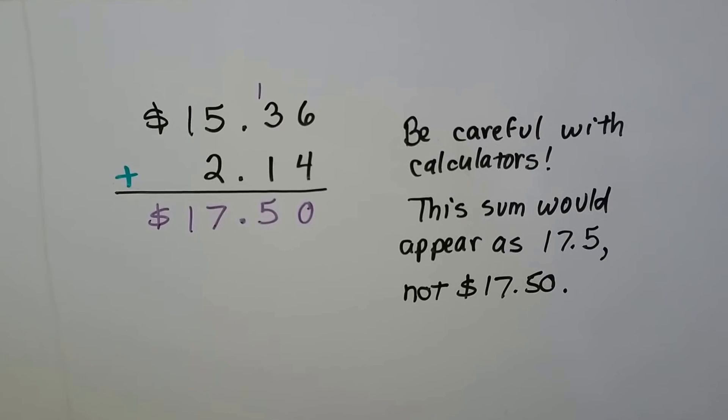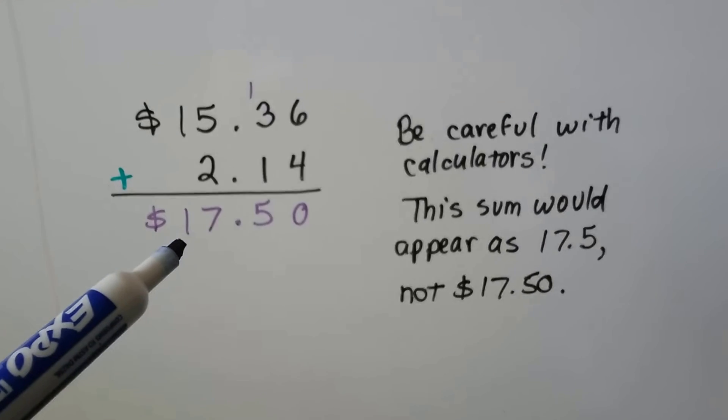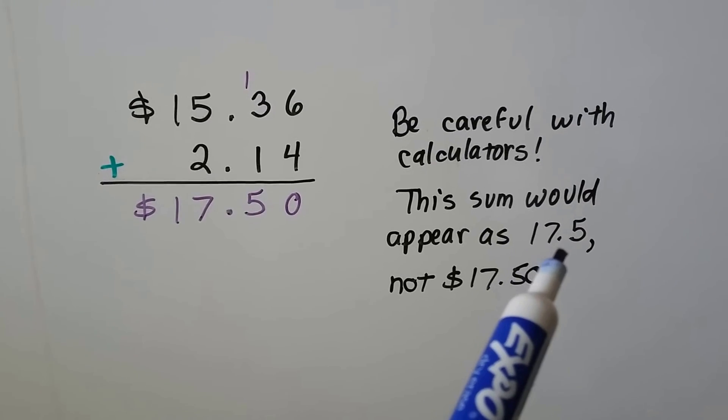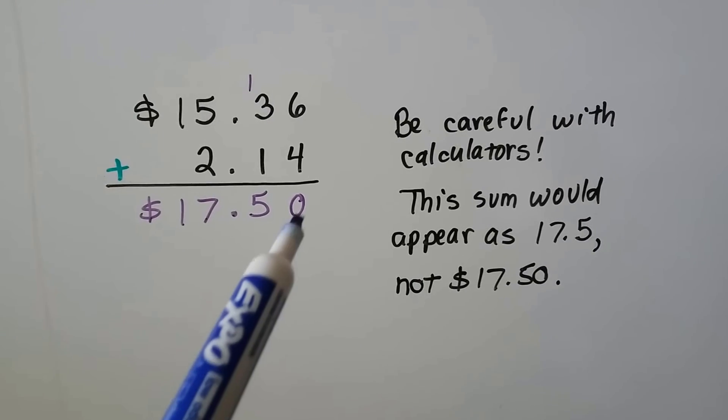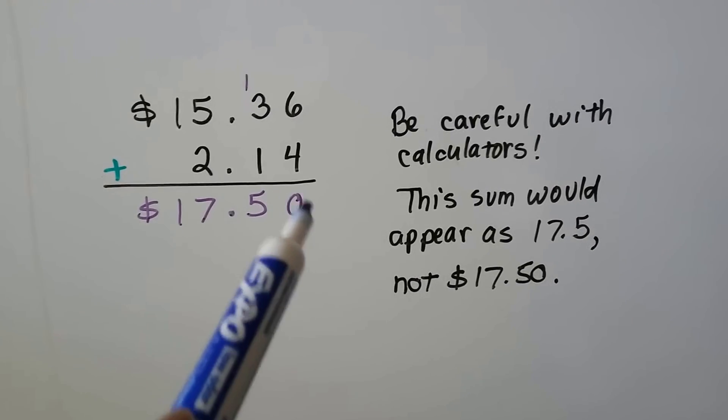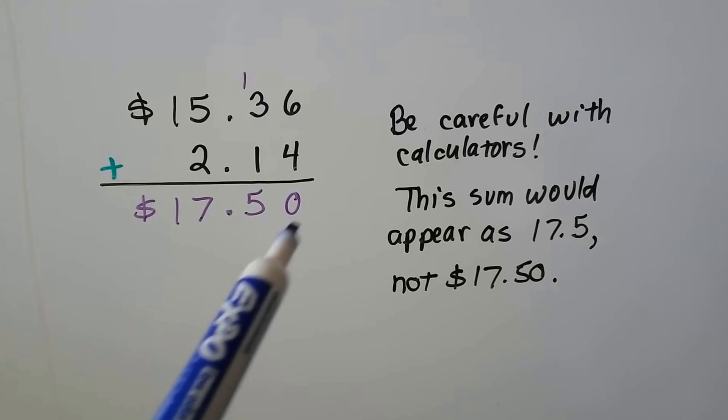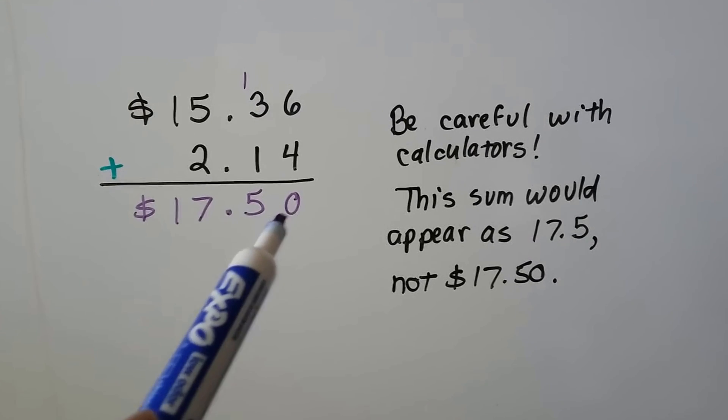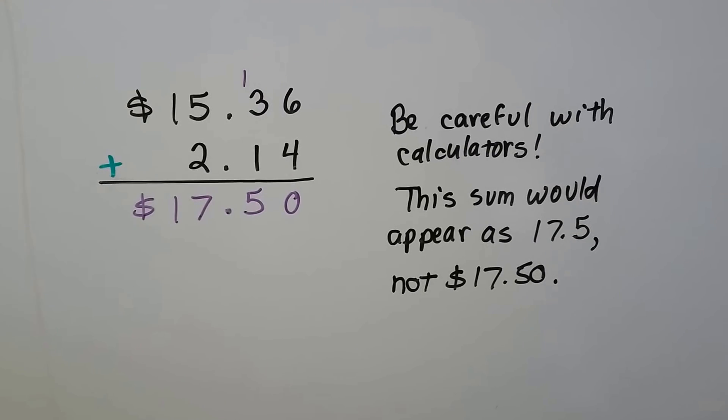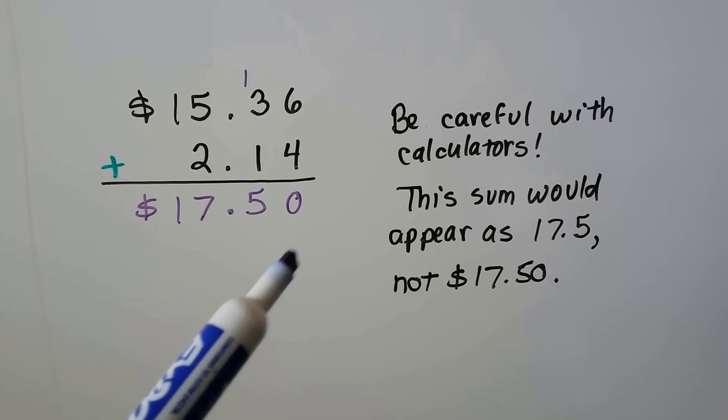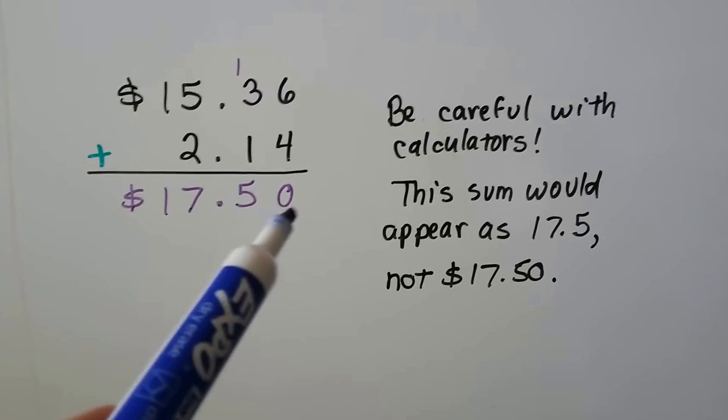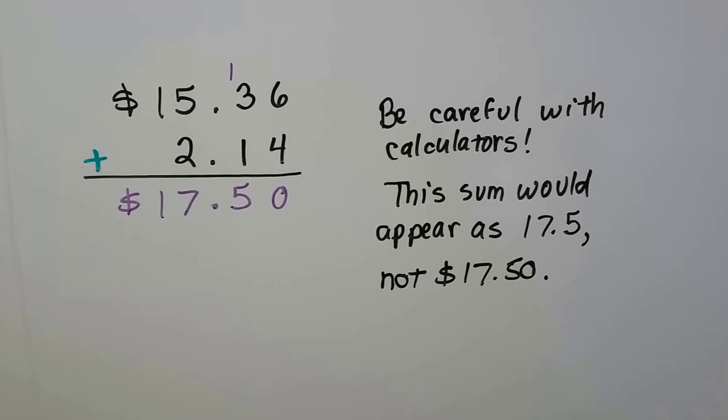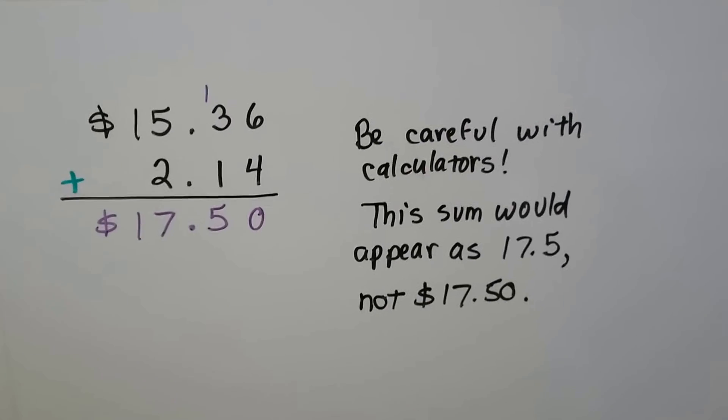Be careful with calculators. This sum would appear as 17.5 on a calculator screen. You have to remember the dollar sign and money has two digits here. It's got a tenths and hundredths. So when you do addition or subtraction with a calculator and it deals with money, remember that there's supposed to be two digits there. You can put a zero there as a placeholder.